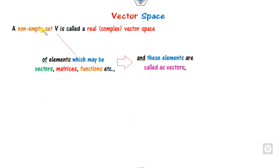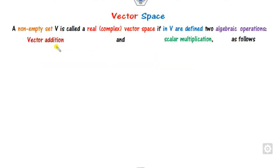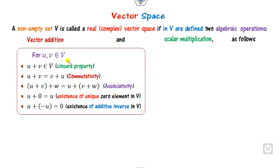First of all, what is a vector space? It is any non-empty set V whose elements may be vectors, matrices, or functions. These elements are also called vectors. It is called a real or complex vector space if it defines two algebraic operations: vector addition and scalar multiplication, which satisfy certain properties. The closure for addition means it forms an abelian group — satisfying commutativity, associativity, existence of a unique zero element, and the additive inverse.